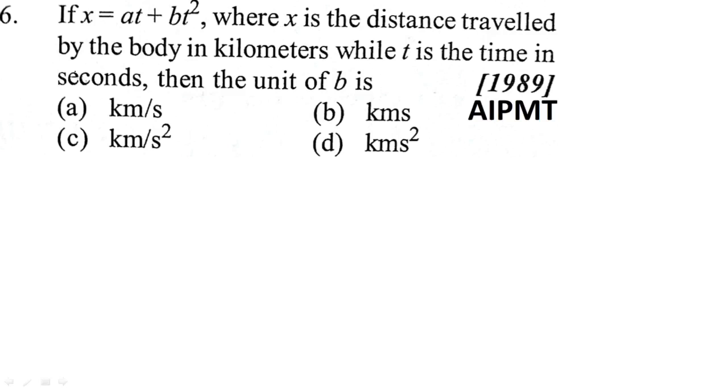Hello everyone, we are solving a question from AIPMT 1989. This question states: if x equals at plus bt squared, where x is the distance traveled by the body in kilometers while t is time in seconds, then the unit of b is? So, the unit of b is asked.